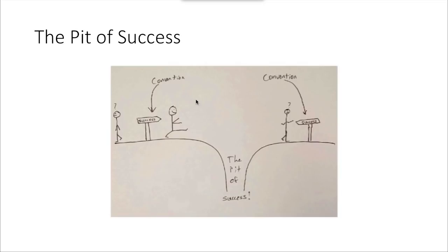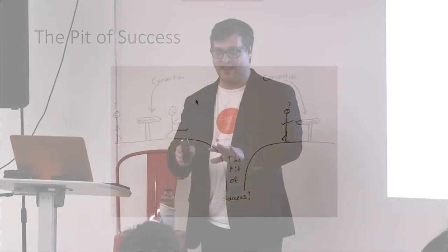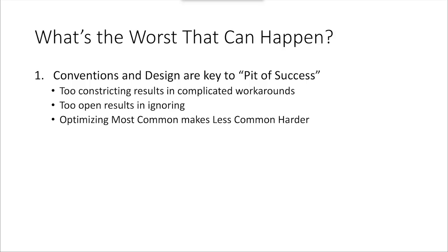The pit of success: most software out there, especially in Selenium land, is kind of ad hoc put together. Someone has an idea of how it needs to look, and if you don't follow exactly the way they had in mind, you fall into the pit of failure — there's one narrow path of success, and anything to get off that path, you fail. The goal is to turn that around and create a pit of success, where you have to try hard not to succeed. That means having conventions — but if you make them too constricting, people find complicated workarounds; too permissive, and people ignore them.